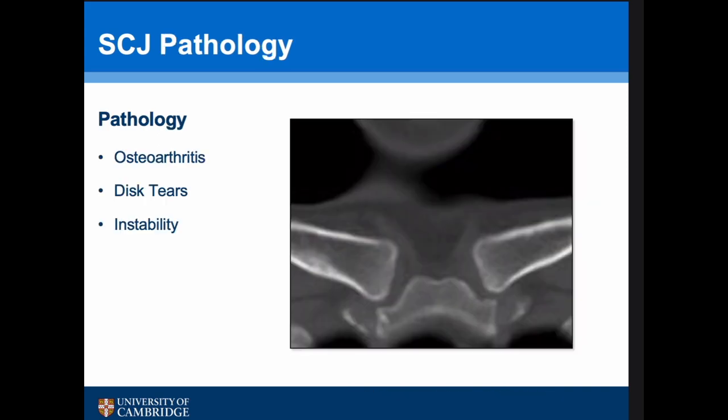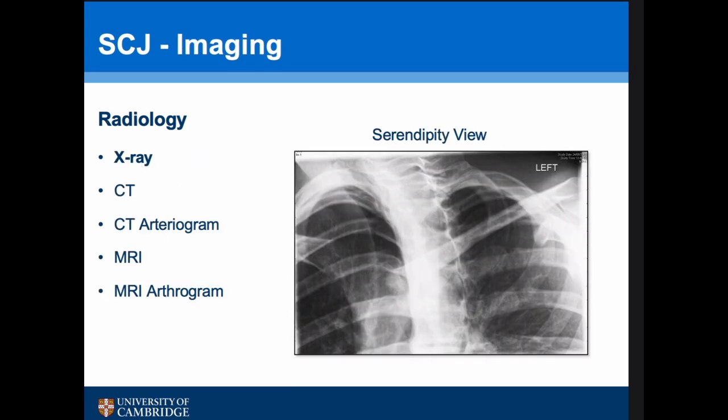The common SCJ pathologies are osteoarthritis, disc tears, and instability. I'll start by going through the imaging of the sternoclavicular joint.